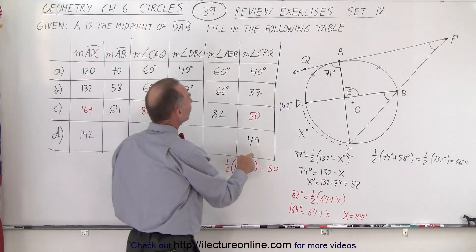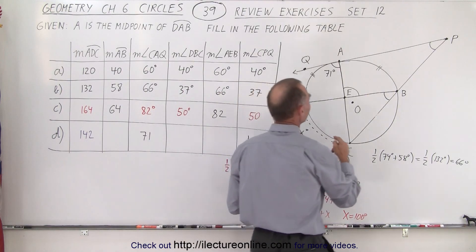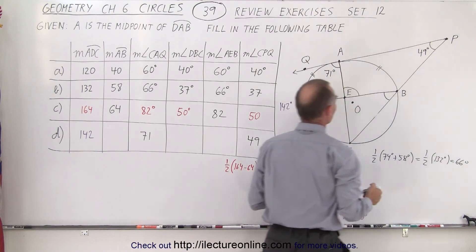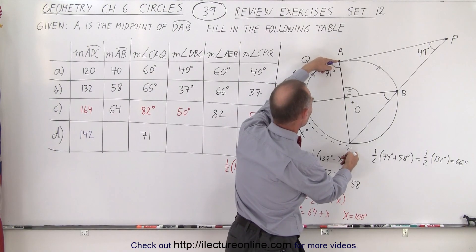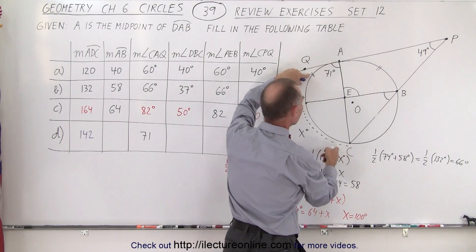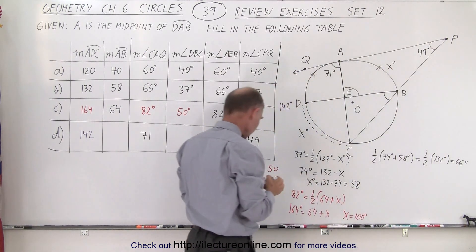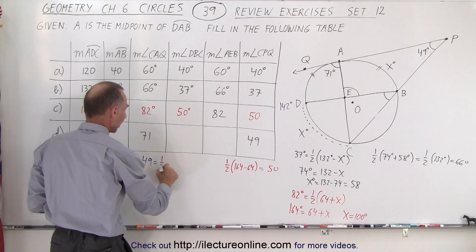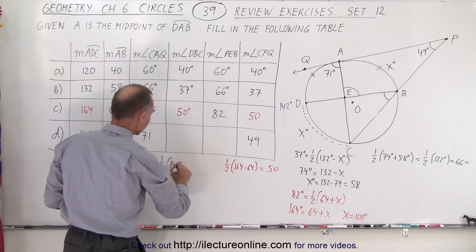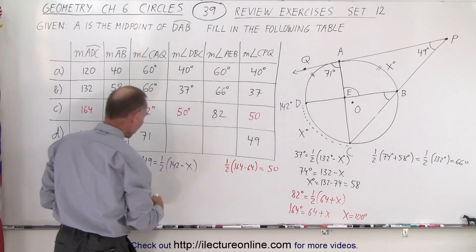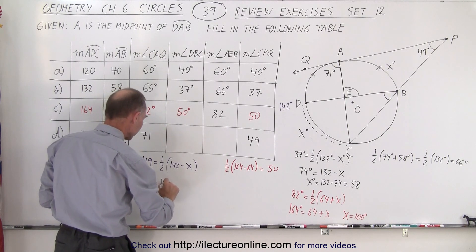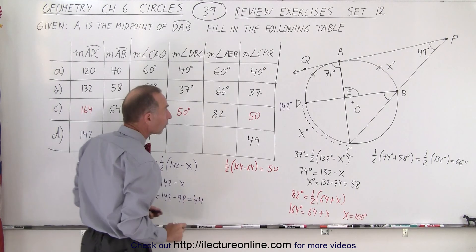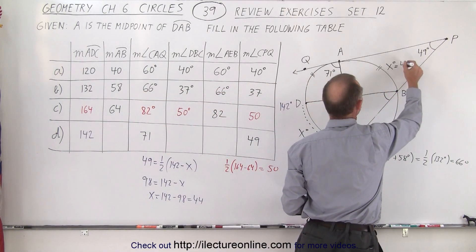They also give us that CPQ is 49, so from C to P to Q is 49 degrees. This would be half of this arc value minus that arc value. Let's call this X degrees. So we can say 49 equals one half the difference between 142 and X. Multiply everything by 2: that gives us 98 equals 142 minus X.